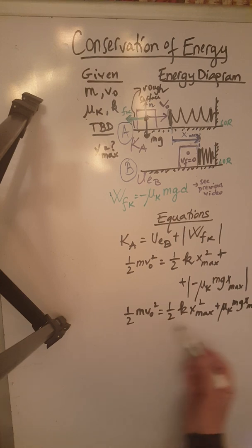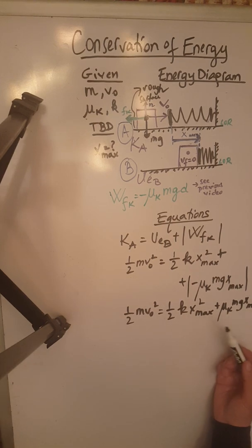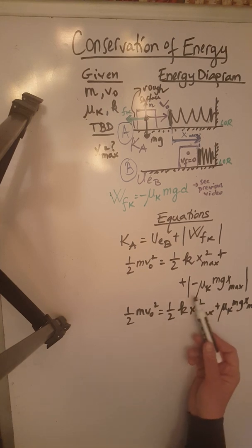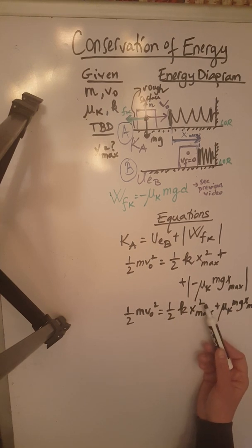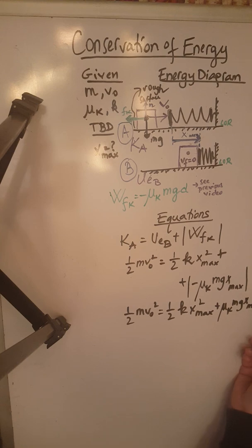So now this equation over here, we know everything in it except for x max, but as you can see, x max shows here at the second power and here at the first power. So this is going to be a quadratic equation.